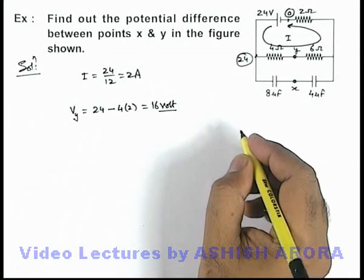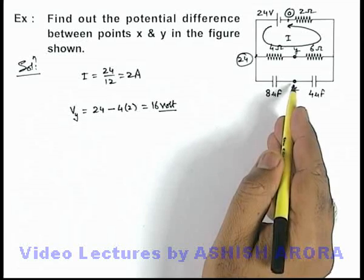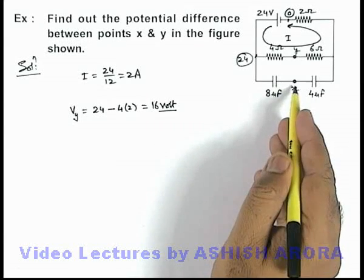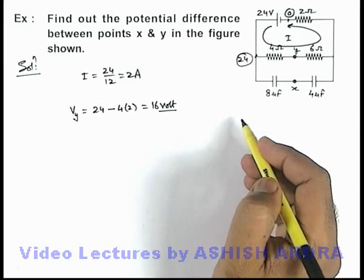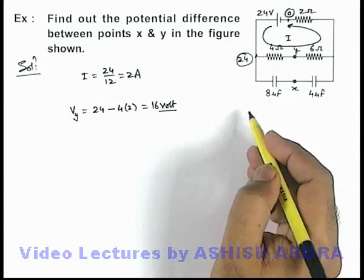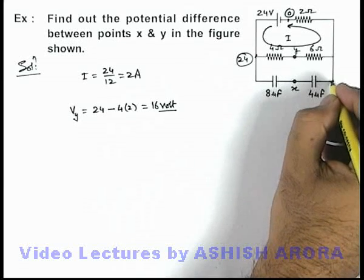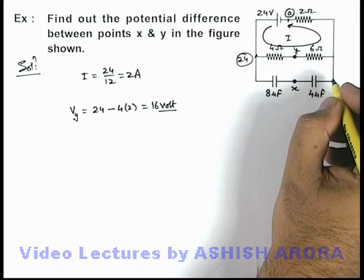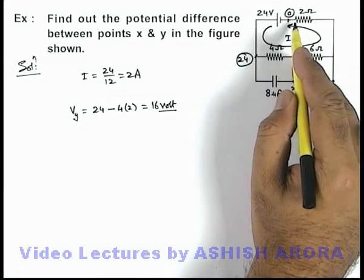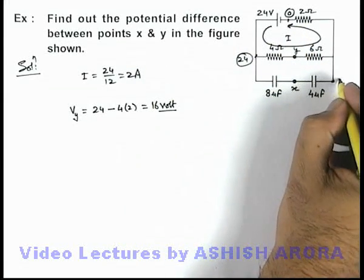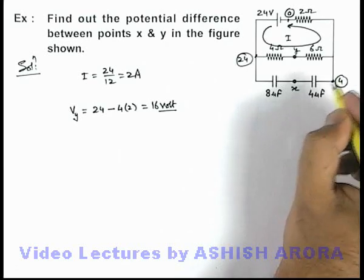If we talk about the potential at point x, this can be obtained by using the nodal equation at the junction where potential is x. Here potential is 24 volt. If we wish to find out the potential at this terminal, that can be written as 2i higher than zero. Here i is 2 ampere, so potential here can be written as 4 volt.